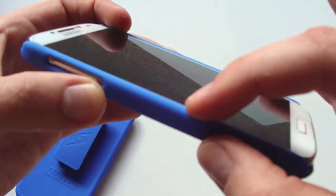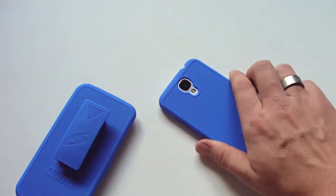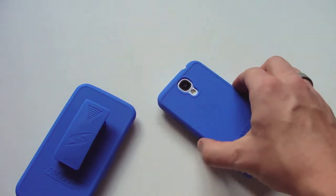The case is raised above the screen, so if you want to place your phone face down on a flat, smooth surface, you will have protection against your screen.